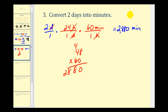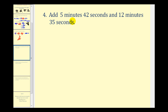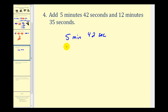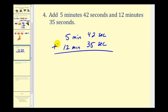Now let's talk about adding and subtracting time. Let's add five minutes forty-two seconds and twelve minutes thirty-five seconds. The most important thing is to line up the same units: five minutes, forty-two seconds plus twelve minutes, thirty-five seconds.